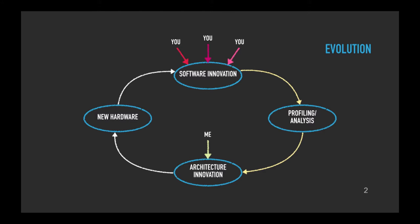Most people think of instruction sets as a fairly constant, static thing, but actually they're part of a bigger evolutionary cycle, which starts with the new applications and services that people like you deploy. Computer architects then profile and analyze them to work out what makes them tick, and then we start to think about ways in which we can evolve or extend the computer architecture in order to make them perform better or more efficiently. Some of that ends up in new hardware, and then that hopefully ends up in your hands, and then the cycle continues.